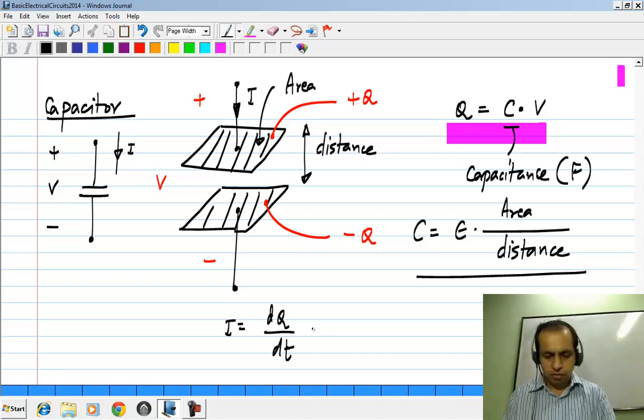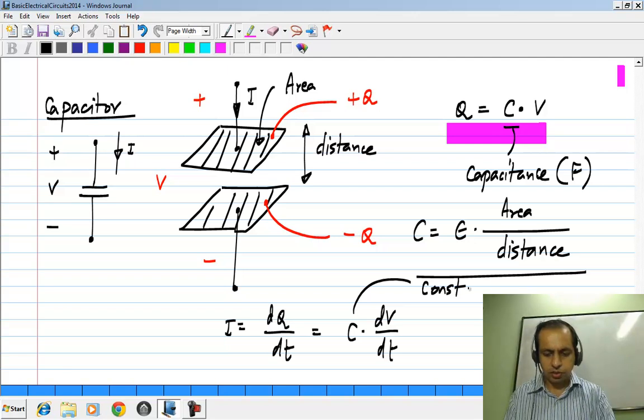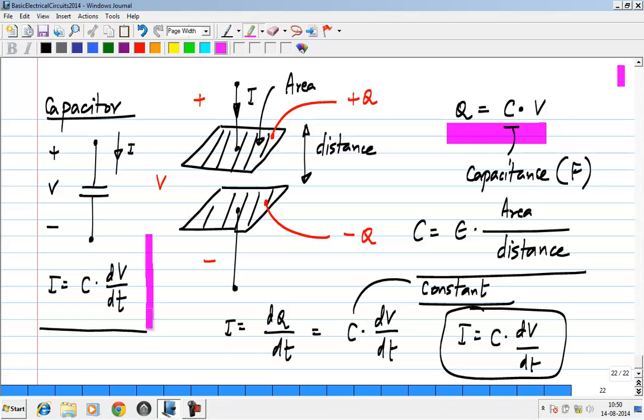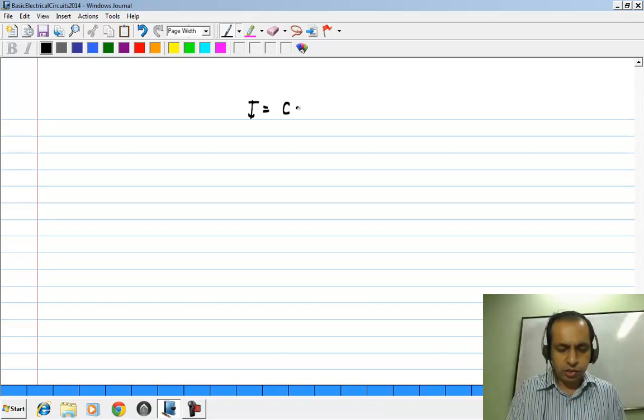Now from this relationship, we have C times dV by dt. It is of course, assume that the capacitance itself is a constant. This is a given for all the capacitors that we will be using. So we have this relationship I equals C times dV by dt, and this is the V I relationship of a capacitor. The current is related to the time derivative of the voltage across the capacitor. Now this comes from the linear relationship between charge and voltage, which we have converted to relationship between current and voltage. So for the purpose of analyzing circuits, this is the relationship we will be using.